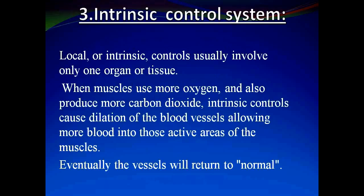The third type is the intrinsic control system. These are local systems that usually involve only one organ or tissue. When muscles use more oxygen and produce more carbon dioxide, intrinsic controls cause dilation of blood vessels, allowing more blood into those active areas of the muscle. Eventually the vessels will return to normal.